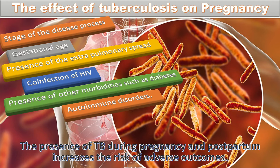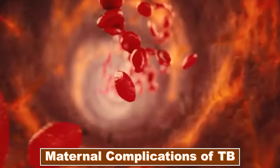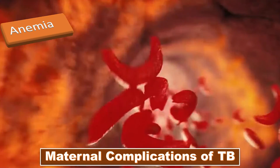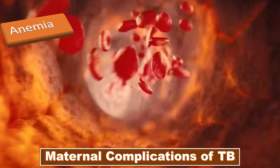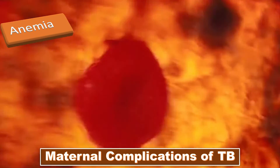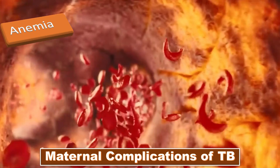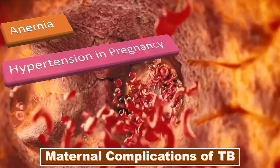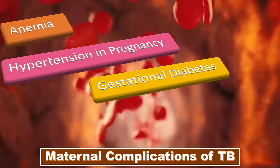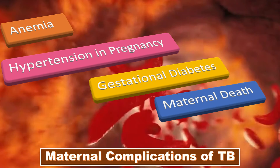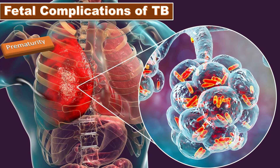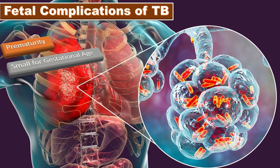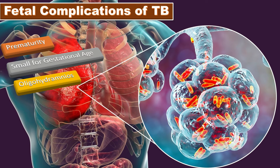The maternal complications of tuberculosis include anemia — Cooper et al. observed that the risk of anemia was 41% in pregnant women with tuberculosis (both pulmonary and extra-pulmonary) compared with 23% in women without active tuberculosis — as well as hypertension in pregnancy and gestational diabetes. There were two maternal deaths accounting for 4% of all cases. Fetal complications included prematurity risk of 32%, small for gestational age at 22%, and high prevalence of antenatal oligohydramnios in women with active tuberculosis.